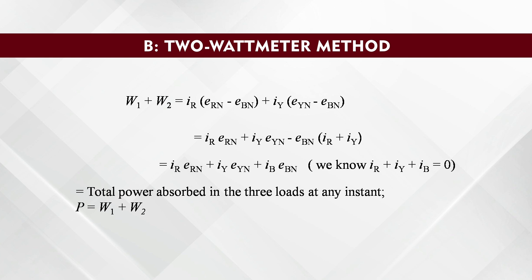After opening the bracket, you can write the equation as I_R·E_Rn plus I_Y·E_Yn, with E_Bn common for both I_R and I_Y. So you can write: I_R·E_Rn plus I_Y·E_Yn minus E_Bn(I_R plus I_Y). Since we are assuming a balanced current, all the currents sum to zero: I_R plus I_Y plus I_B equals zero. So you can replace I_R plus I_Y with minus I_B. Substituting this value, you get: W1 plus W2 equals I_R·E_Rn plus I_Y·E_Yn plus I_B·E_Bn.